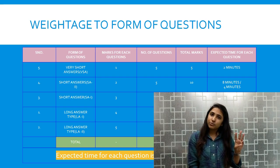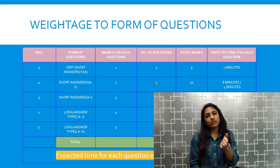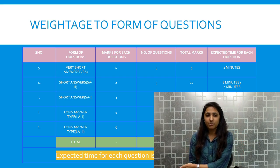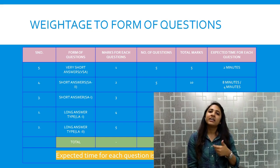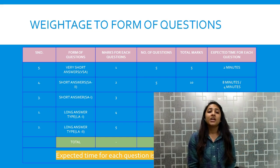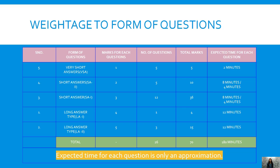Weightage to form of questions: there are typically 5 kinds of questions. First, very short answer type questions, short answer type questions, short answer type questions carrying different marks, long answers — two types. Very short answer type questions are of 1 mark each and there will be a total of 5 questions. The expected time for each question will be approximately 2 minutes.